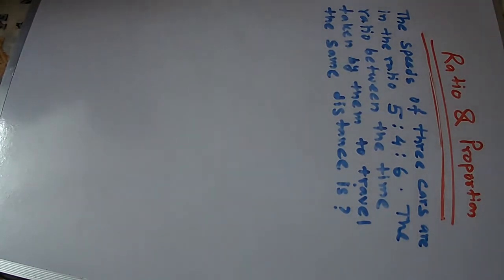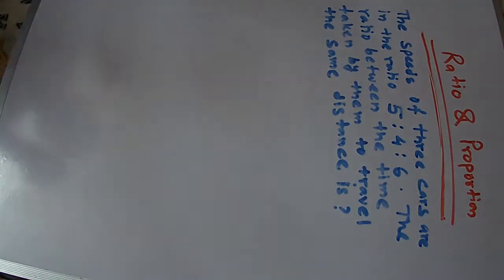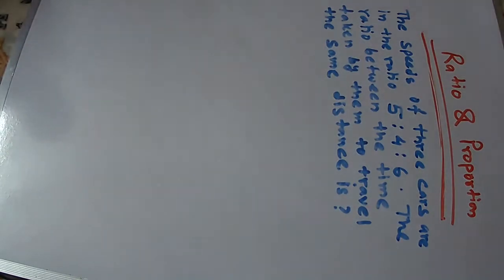the ratio of 5 is to 4 is to 6. We need to find the ratio between the time taken by them to travel the same distance. Given the speed ratio of 5:4:6, and they all travel the same distance, we need to find the time ratio. So I will answer the question about